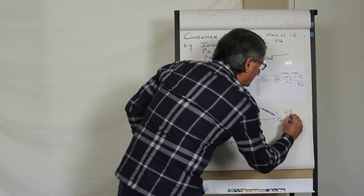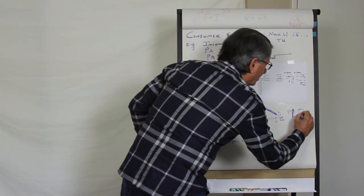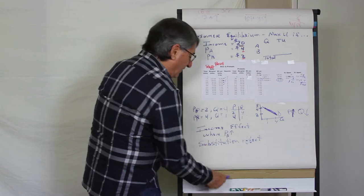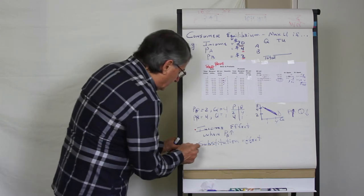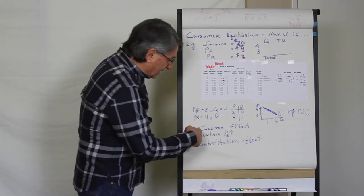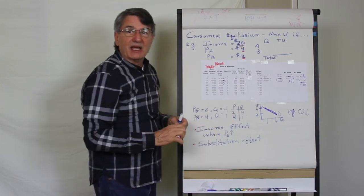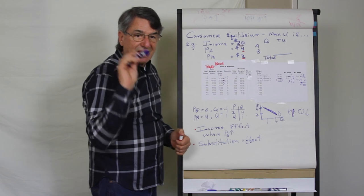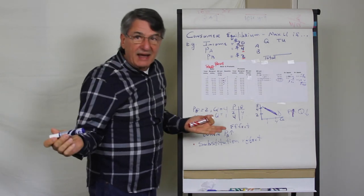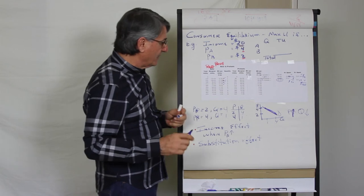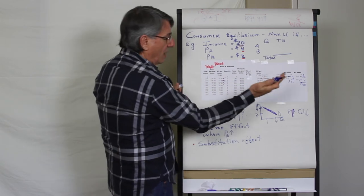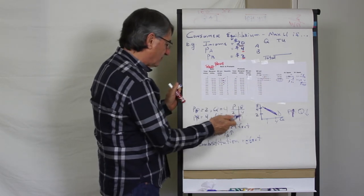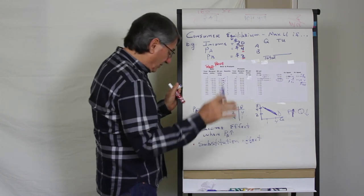The income effect says that if the price of pretzels goes up, you can't buy as many of the two goods as before because the $20 just doesn't buy as much — the price of pretzels is now higher. That certainly helps explain why the consumer would buy fewer pretzels when the price goes from $2 to $4. But we can eliminate the income effect.